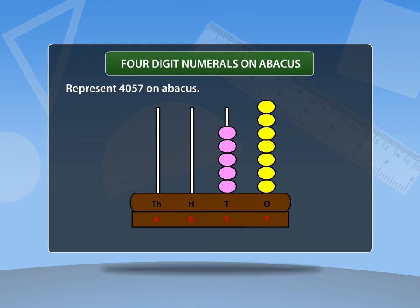In hundreds rod, place no bead that will represent number zero, and in thousands rod place four beads that will represent number four. Therefore this abacus represents a four digit number, that is 4057.